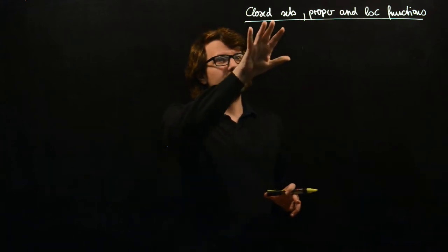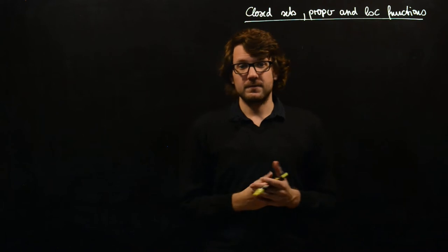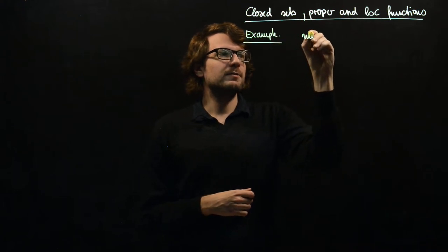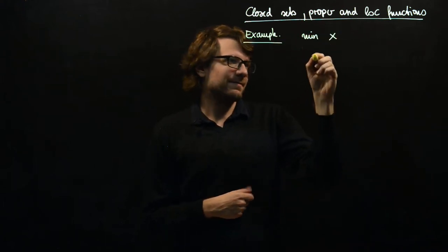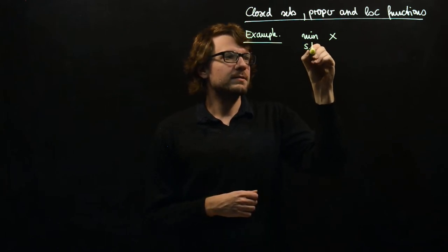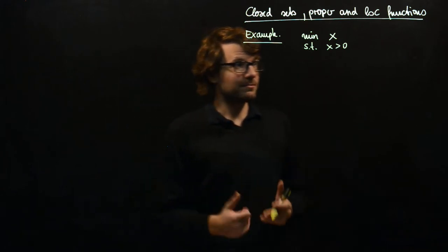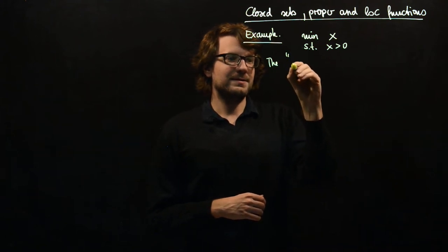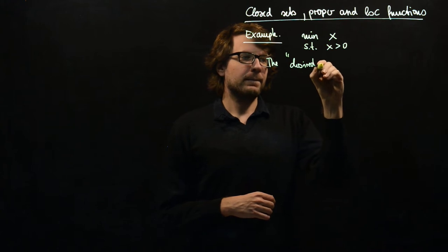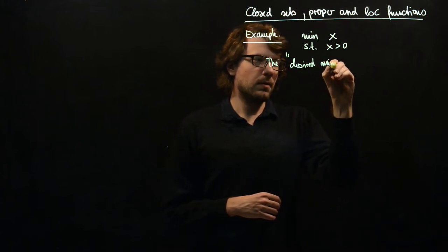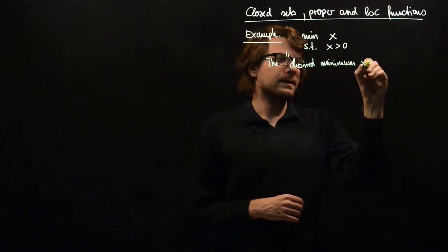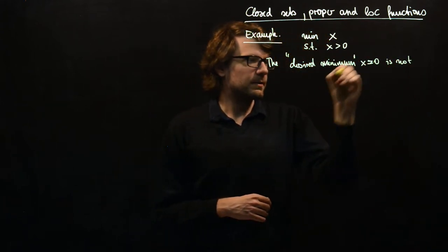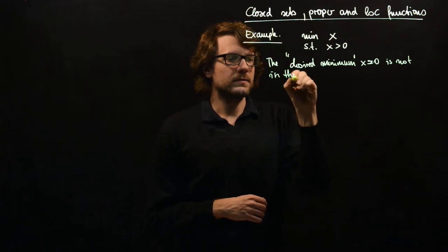Let's first talk about the closeness of the set of constraints. Let's see an example. So if we want to minimize just some variable x such that x is strictly greater than zero, then the desired minimum x equals zero is not in the constraint set.